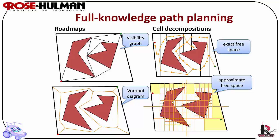Full knowledge path planning. There are several C-spaces that afford topological navigation. These C-spaces are visibility graphs, exact free space, Voronoi diagram, and approximate free space. There are four examples of these shown here.